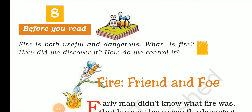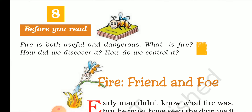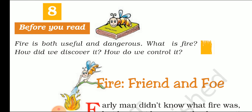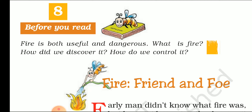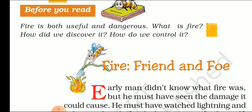Hello dear students, I am Barashar from Thamna Education Institute. In this video we are going to discuss Chapter 8: Fire Friend and Foe. Fire can be a friend or a foe — foe means enemy. Whether fire is a friend or enemy depends on the situation. Before we read, fire is both useful and dangerous. What is fire? How did we discover it? How do we control it? We will get these answers during the lesson.